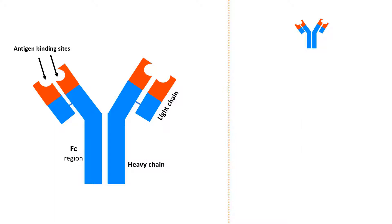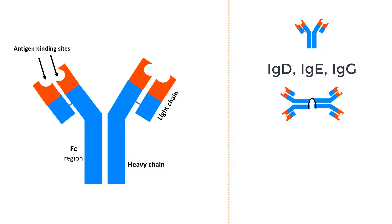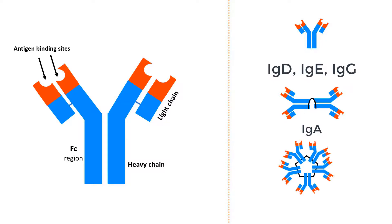The antibody can be a single molecule such as IgD, IgE, and IgG. Or they can be a couple of molecules connected together such as IgA antibody, or a cluster of five antibody molecules connected together such as IgM antibody.